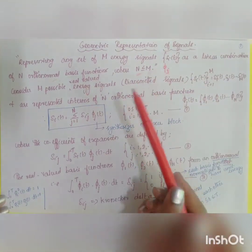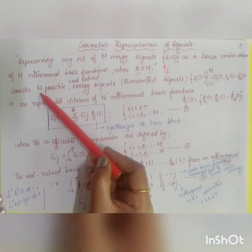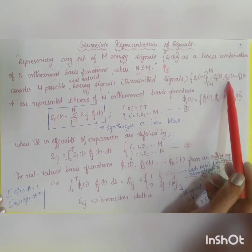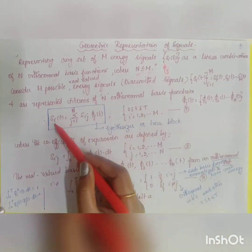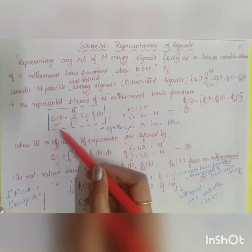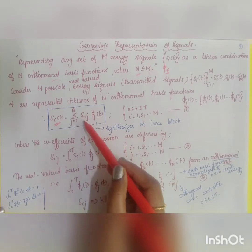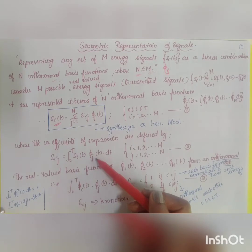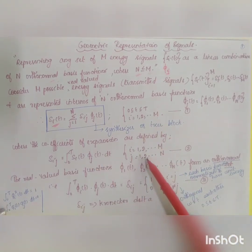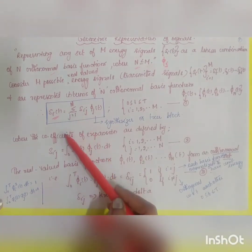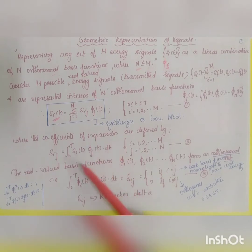Consider M possible real-valued energy signals — the transmitted signals — so s_i(t) = s1(t), s2(t), ... up to s_m(t). These are represented in terms of N orthonormal basis functions as: s_i(t) = summation from j=1 to n of s_ij × phi_j(t), where the coefficient s_ij is defined as the integral from 0 to T of s_i(t) × phi_j(t) dt, where i = 1, 2, ..., M and j = 1, 2, ..., N.